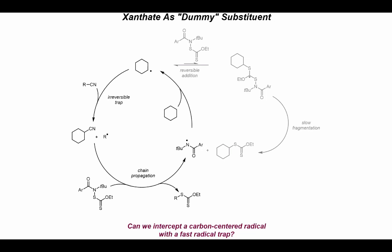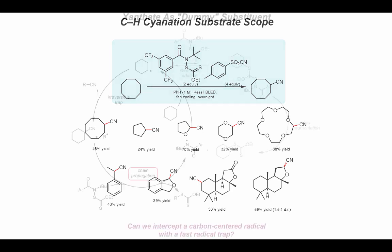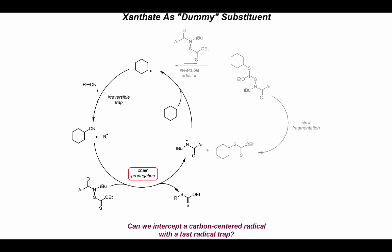So effectively we're asking a kinetic question: can we intercept a carbon-centered radical with a fast radical trap? The answer is kind of. I was able to introduce tosyl cyanide and our xanthate and see cyanation products — with simple hydrocarbons we saw somewhat middling yields, and I was additionally able to functionalize alpha to heteroatoms, at benzylic positions, and in a couple more complex molecules. But kinetics alone isn't the answer. Going back to our mechanism, things were probably going wrong in the chain propagation step, where there's not a high driving force and we get competitive CH xanthylation as well as other byproducts.